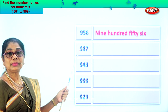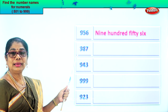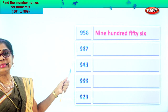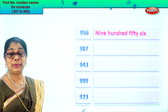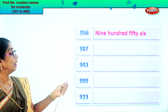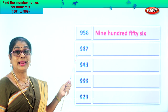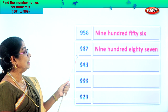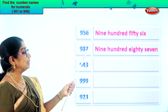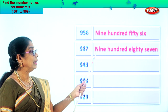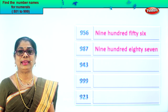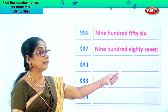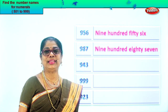Next we have nine, eight, seven. Seven in the ones place, eight in the tens and nine in the hundreds place. Let's read the numeral: nine hundred eighty-seven. So first we write nine hundred, then we write eighty-seven.